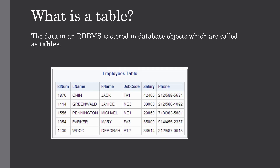First, you should know what a table is in a database. Data in RDBMS is stored in database objects called tables. A table is basically a collection of related data entries and consists of numerous columns and rows — it is a structured type of data and the most common and simplest form of data storage in a relational database. Here you can see an example of an employees table with six columns and five entries. Every table is broken into smaller entities called fields.